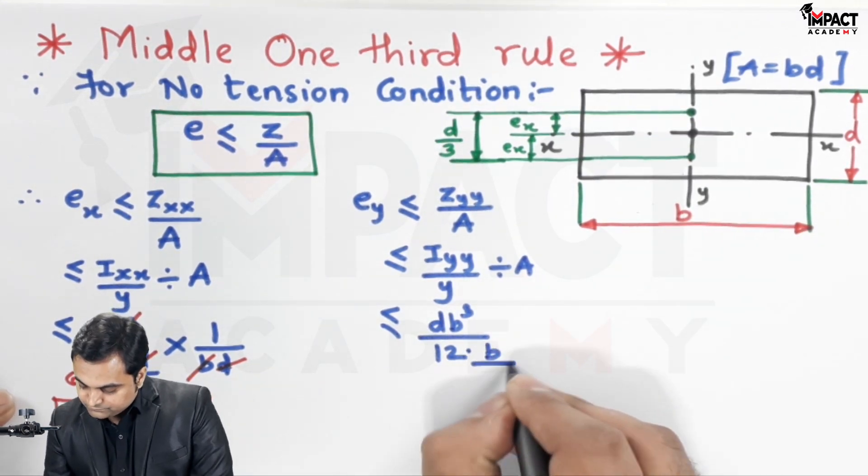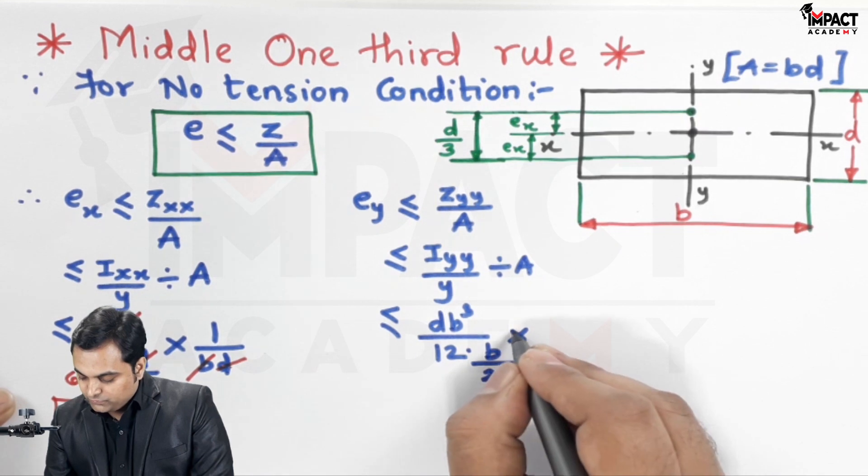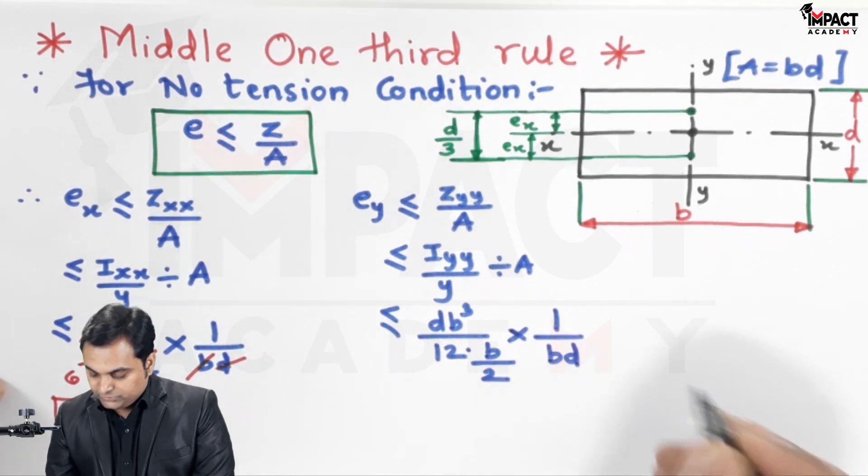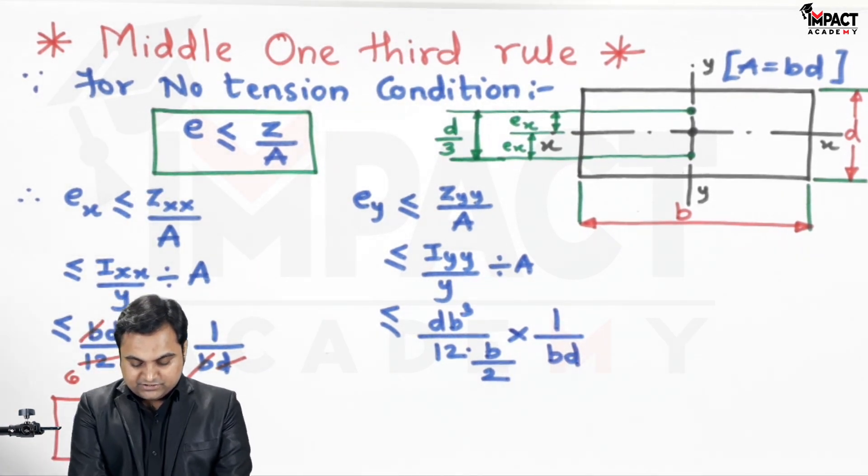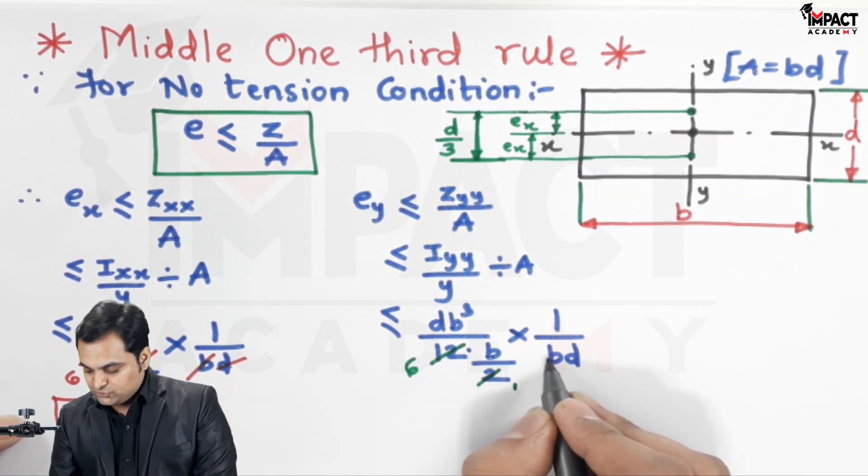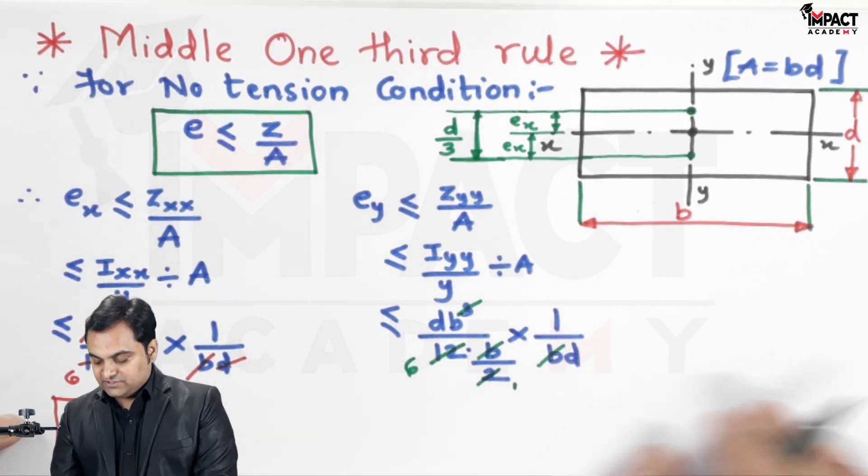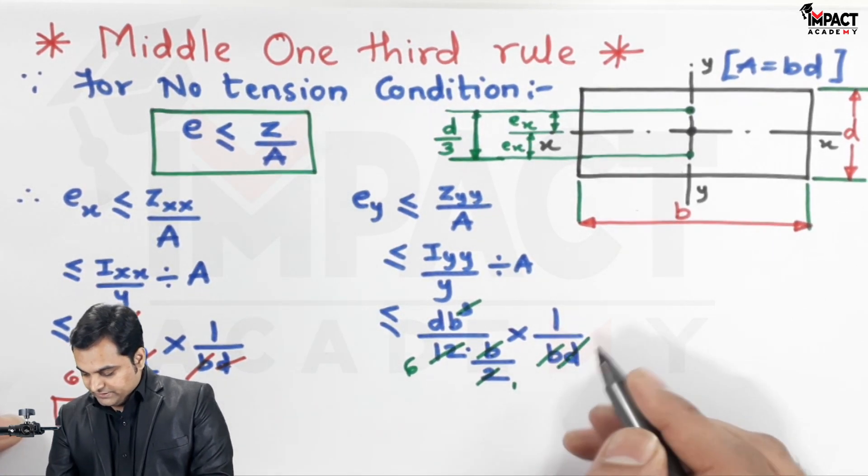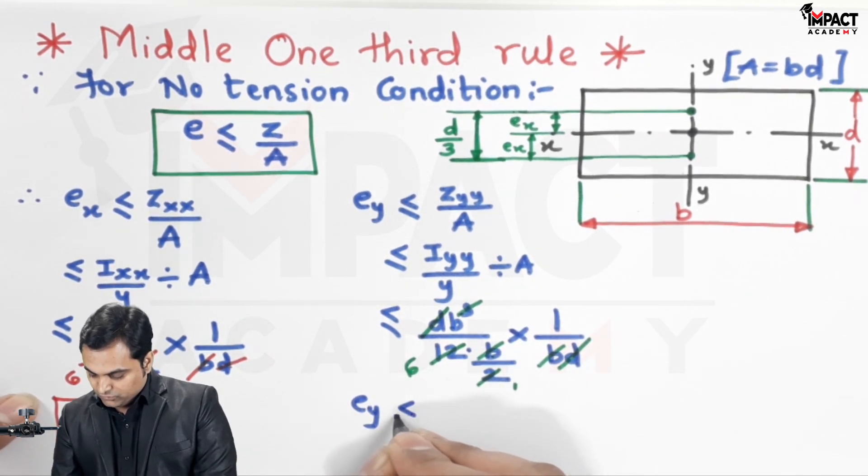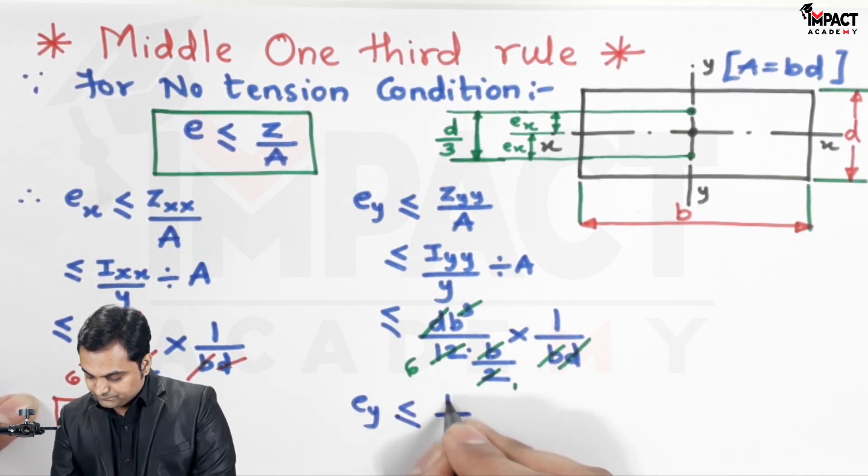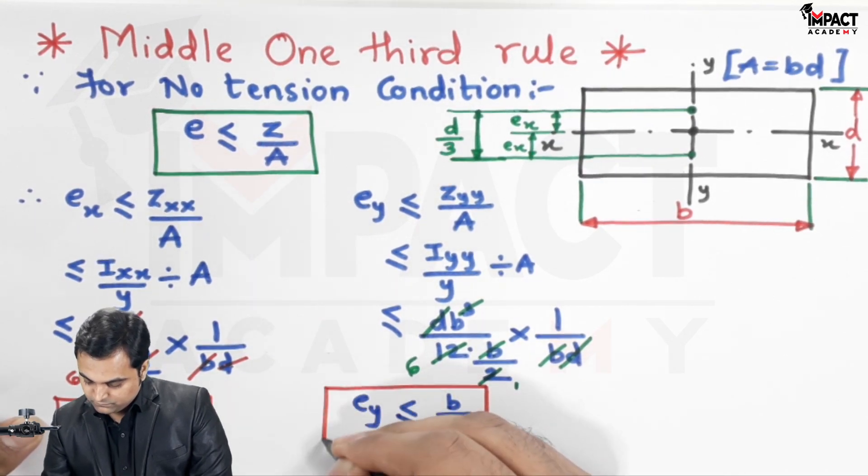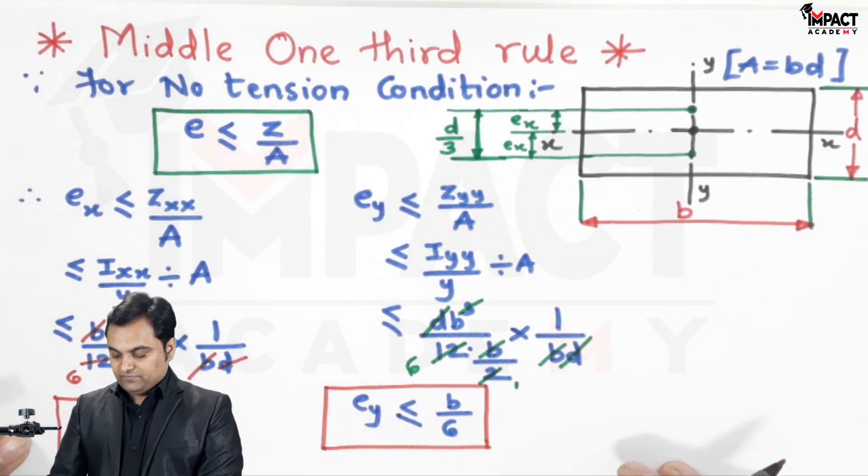This division converts to multiplication by 1/a, and a is b×d. After cancellations, b² cancels leaving b in the numerator, then d cancels out. So ey ≤ b/6.